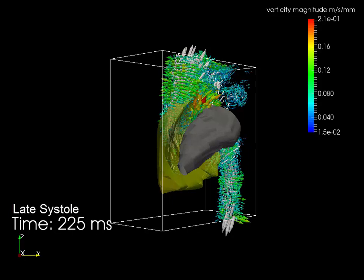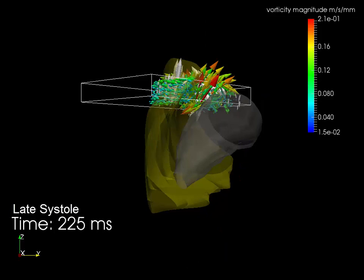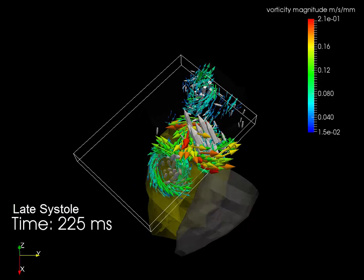Now we are going to look at vorticity, rotation of each element of fluid. Let's look at just the vorticity in the main vessels at the top of the heart.